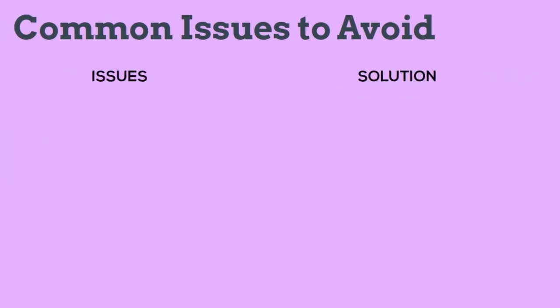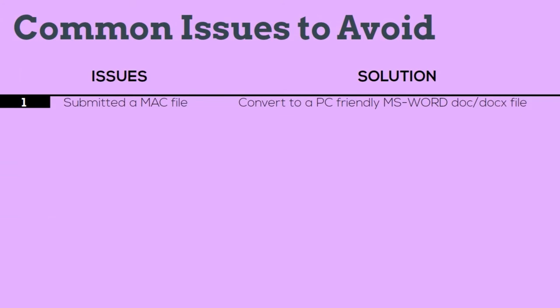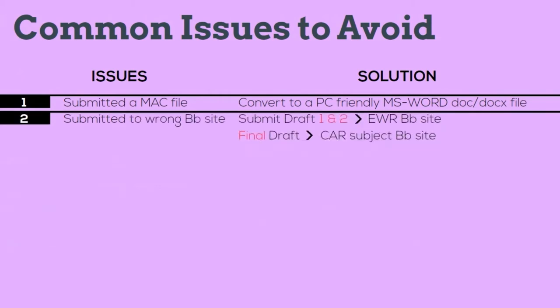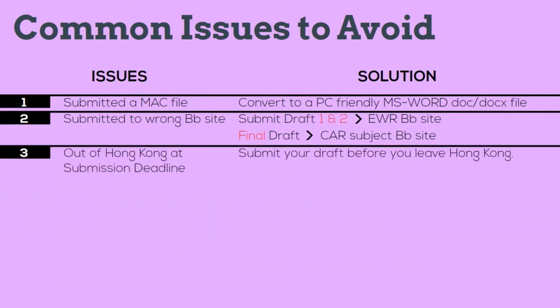Here is a list of issues to avoid when submitting drafts to us. Number one: do not submit a MAC file — make sure your draft is a Word document file. Number two: submit your work to the correct site. There are two Blackboard sites you will use for this course — the normal subject Blackboard site, and the English Writing Requirement Blackboard site where you submit your Drafts 1 and 2. Number three: if you plan to travel, make sure you submit your work before leaving Hong Kong.